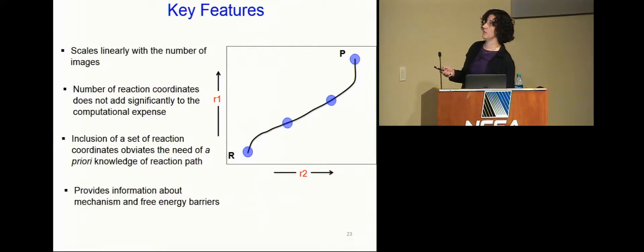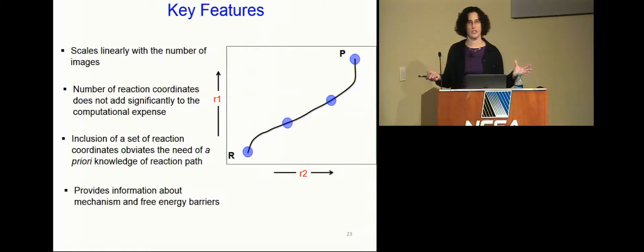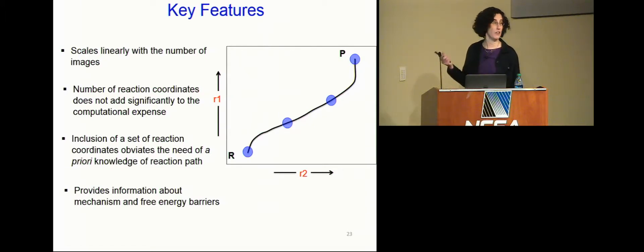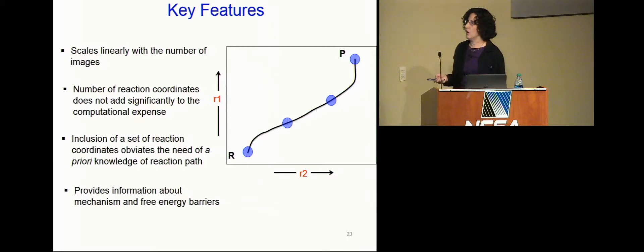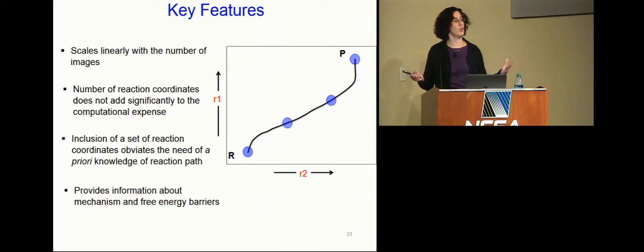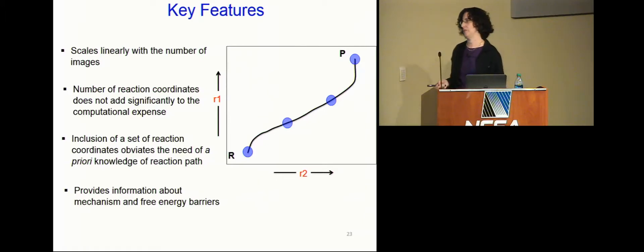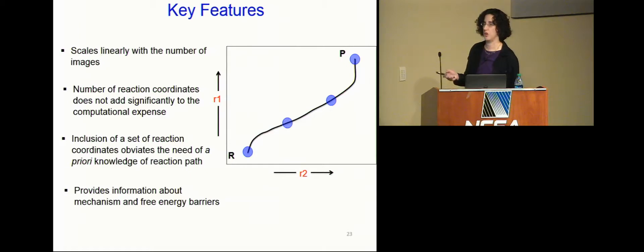Key features of this method: it scales linearly with the number of images, so each image can be sent to a different processor — they don't even talk to each other, making it embarrassingly parallelizable. It doesn't depend on the number of reaction coordinates, so you can include many without increasing cost. Including many reaction coordinates obviates the need to know the reaction path ahead of time, avoiding a priori bias. This gives information about the mechanism and free energy barriers.